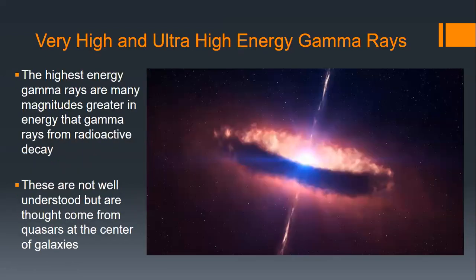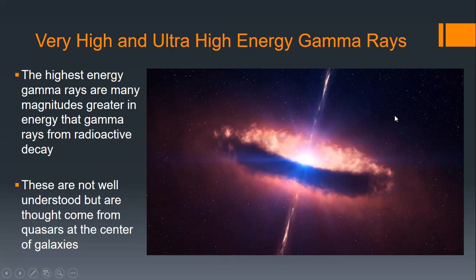The very highest energy gamma rays are believed to come from quasars — incredibly massive black holes in younger galaxies where matter is still falling in. As they create bipolar jets, they accelerate particles near the speed of light, and their interaction with other matter generates these extremely high energy gamma rays and cosmic rays.